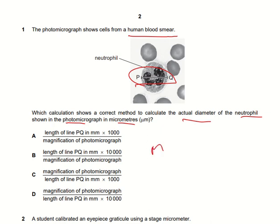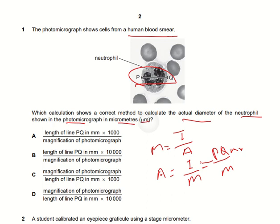As we know, magnification equals image divided by actual length. So we need to find the actual length: actual = image (PQ in millimeters) divided by magnification. Since we need the answer in micrometers, we multiply by 1000 to convert. So option A is the correct answer.